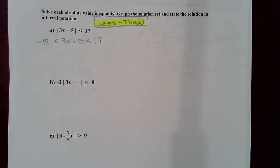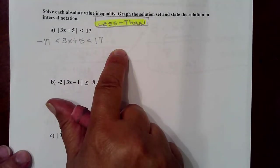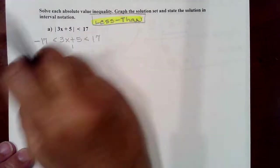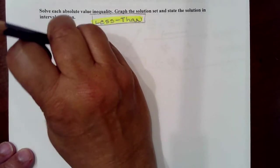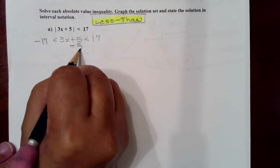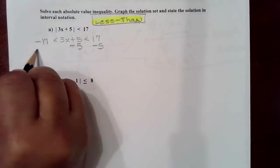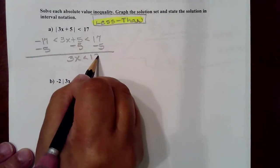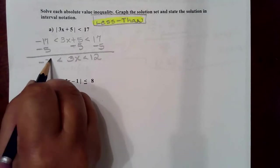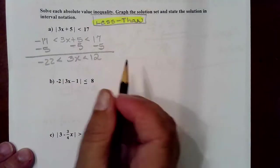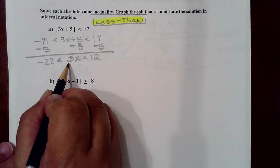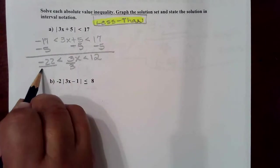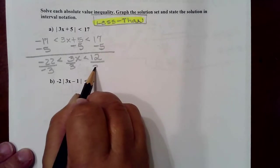For less than, we're doing an in-between statement, a compound inequality. We're going to work this from the middle by subtracting 5 in order to get rid of that positive 5, and likewise on the two tail ends. At that point, you'll have 3x in the middle, 12 on the right-hand side, and negative 22 on the left-hand side. Going back to the middle to make the decision of how to further isolate x, we need to divide by 3, which will call for division by 3 on both of these tail ends.